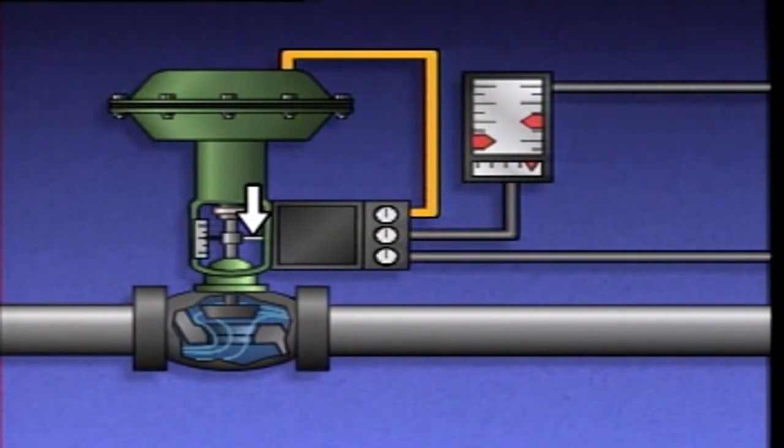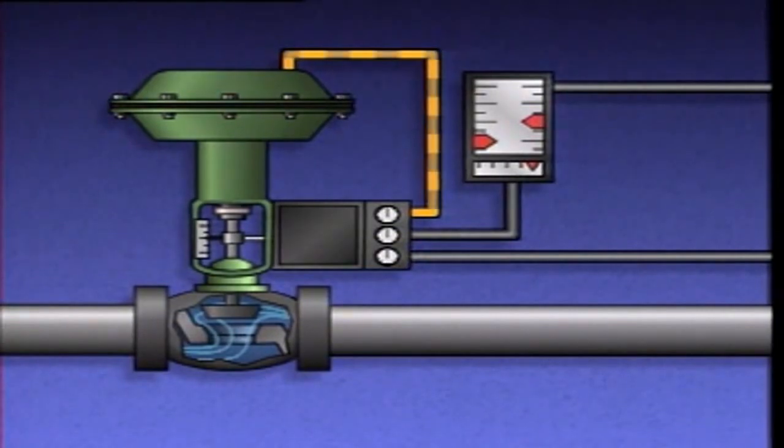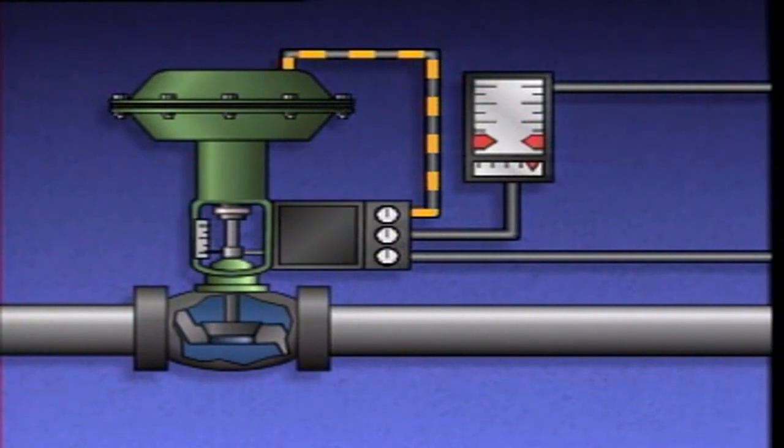The feedback linkage indicates to the positioner how far the valve is from the desired position, in this case fully closed. As the valve moves toward the fully closed position, the feedback linkage causes the positioner to change the air signal to the actuator, so that as the valve reaches the fully closed position, actuator movement is stopped.